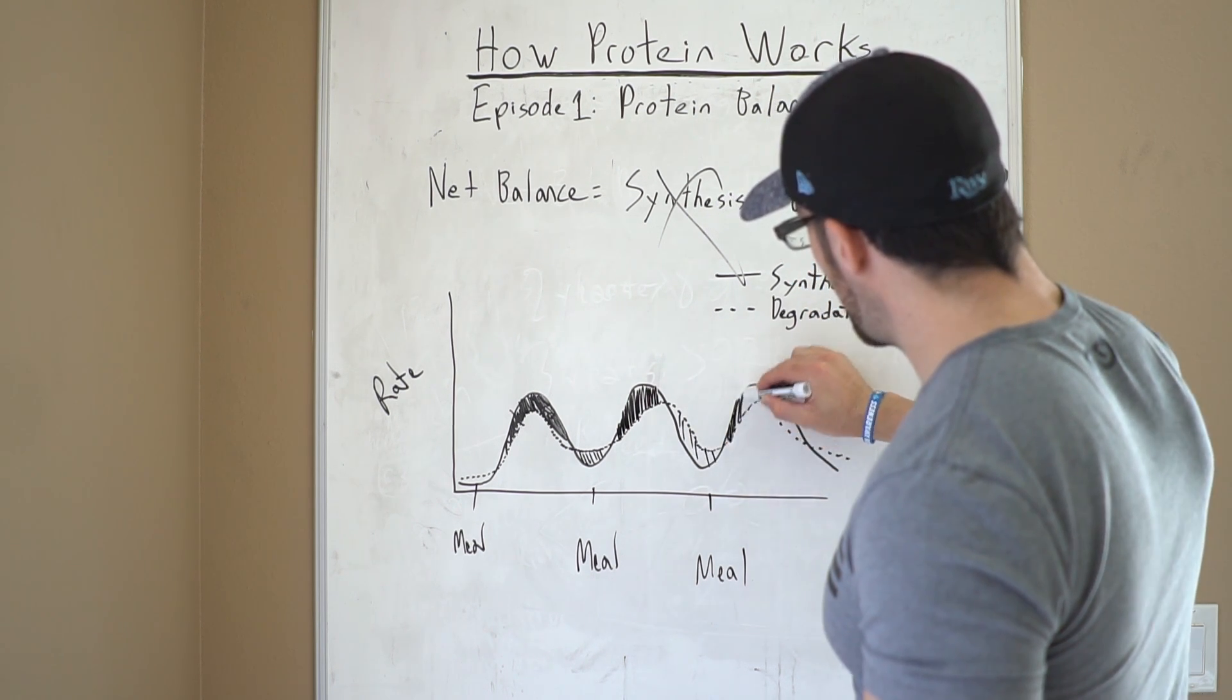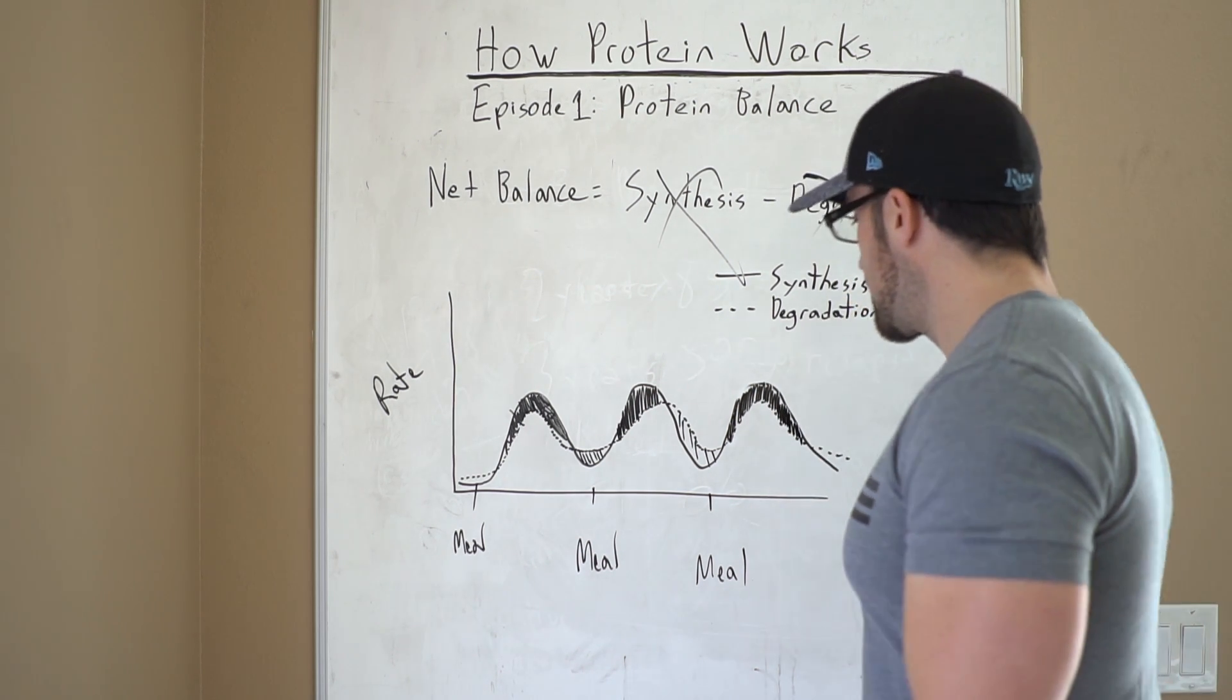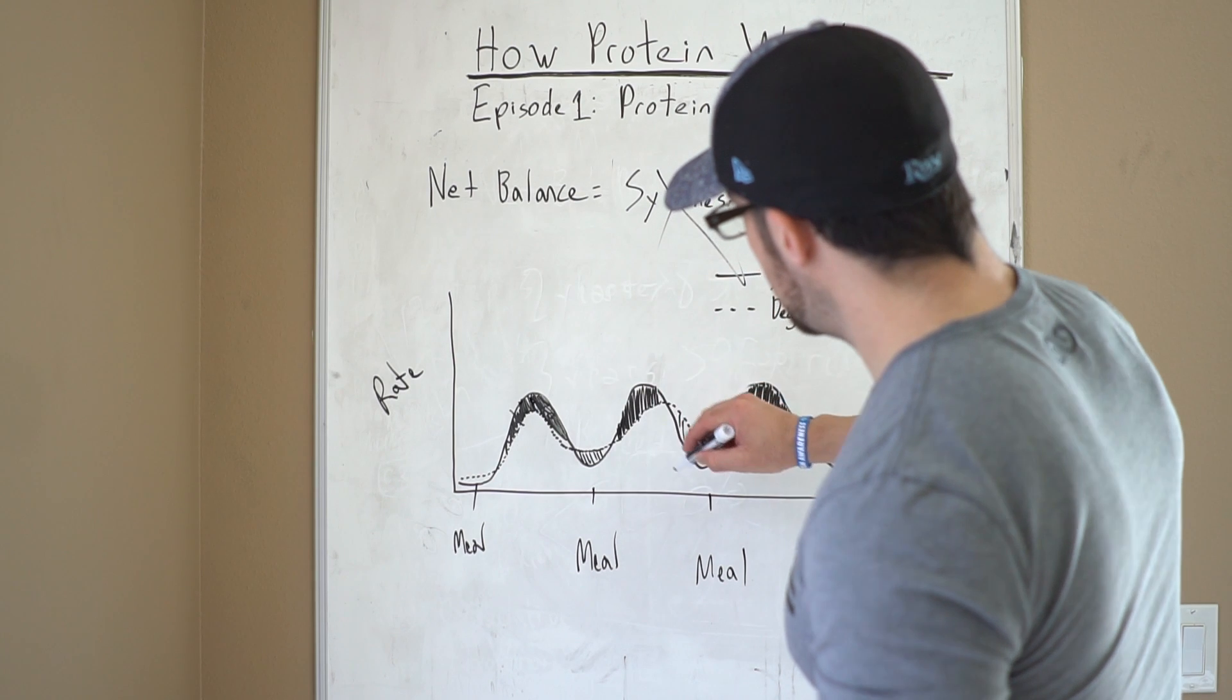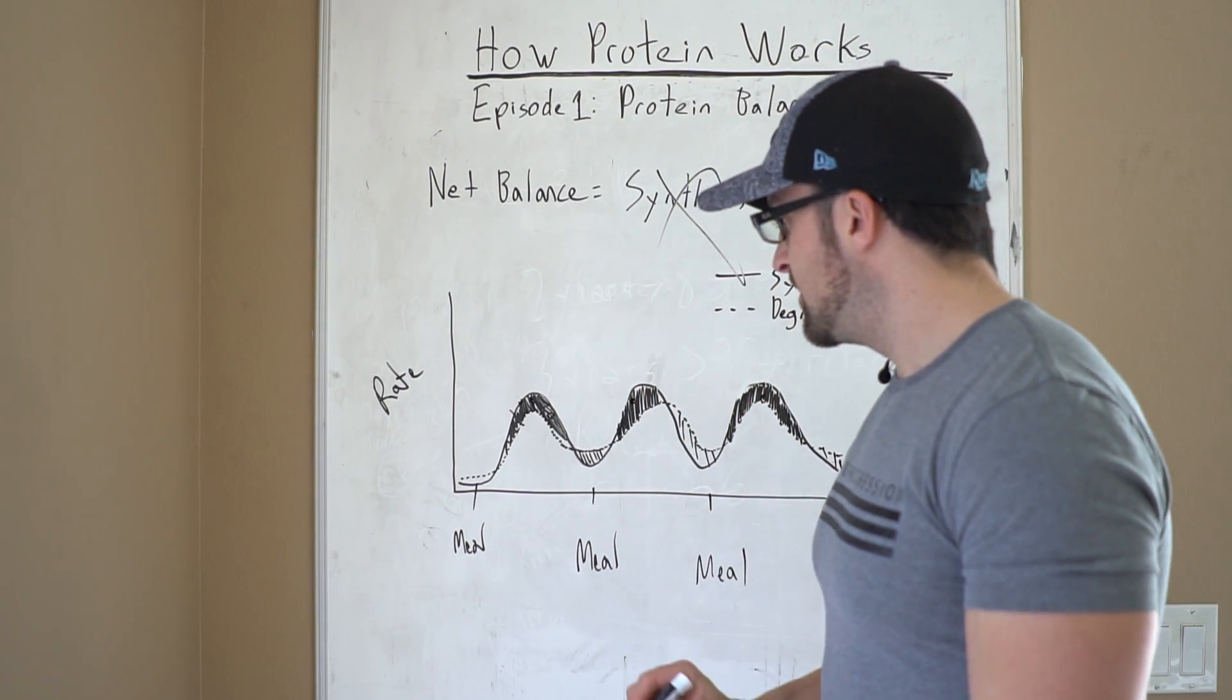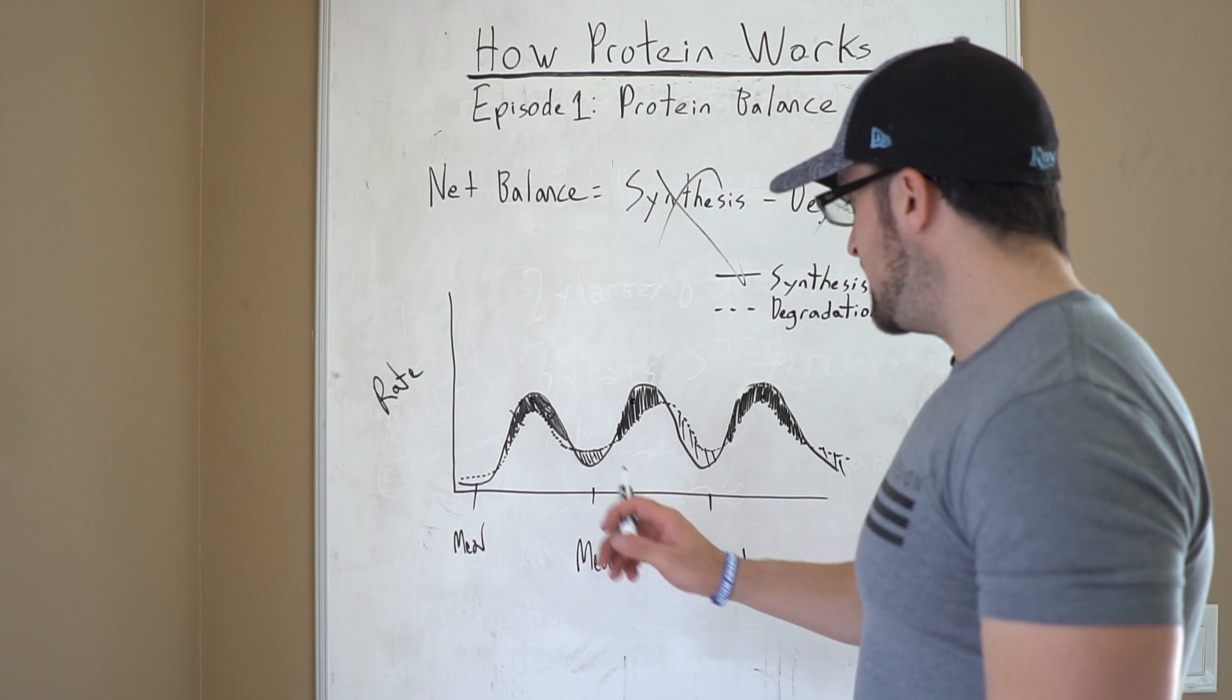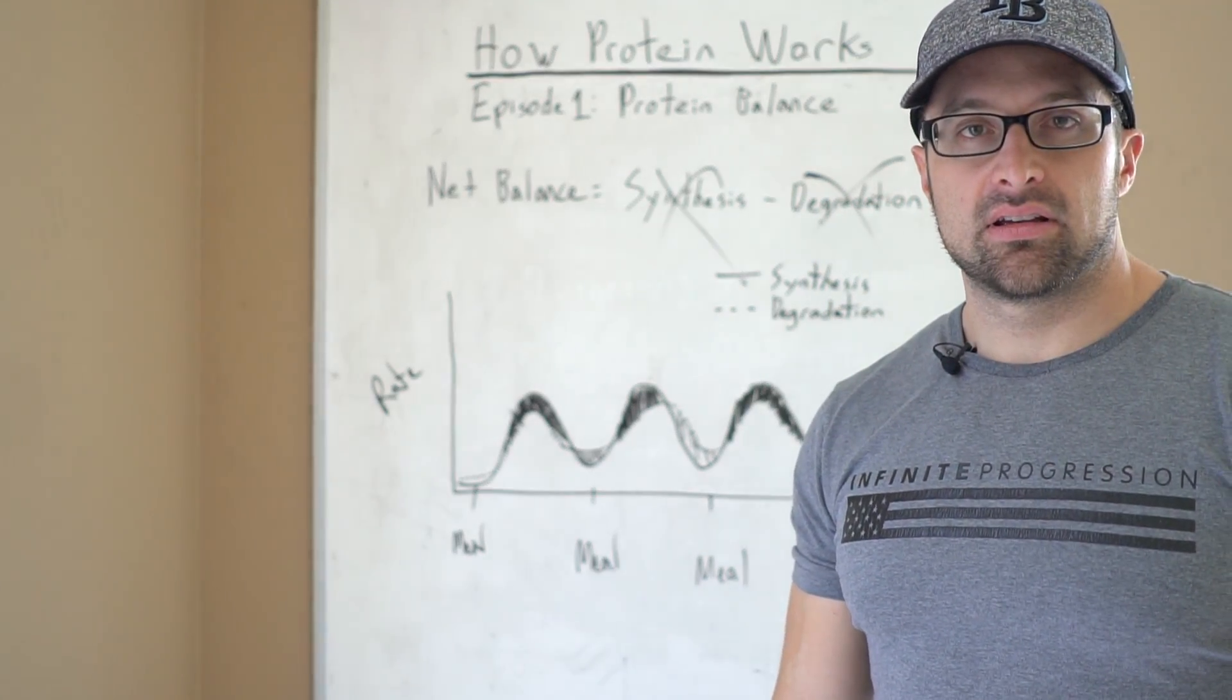If you could perform an integration on these curves, on these peaks, you could determine what your net balance is. So if these areas exceed these areas, you are going to be net positive and anabolic. If the area under the curve of these degradation exceeds this, you will be catabolic.